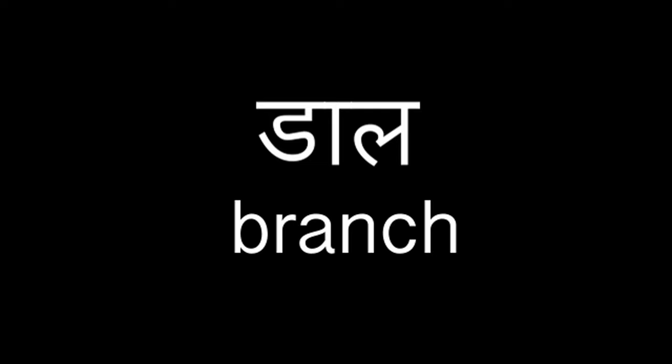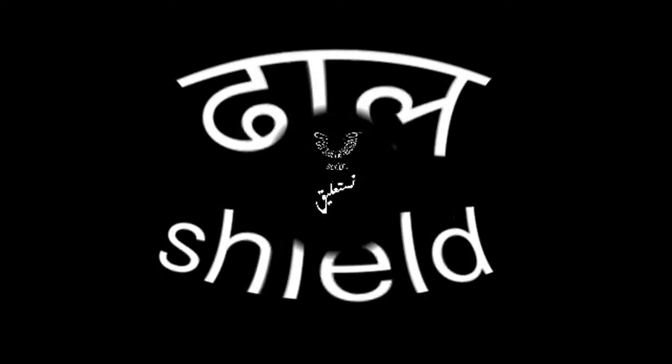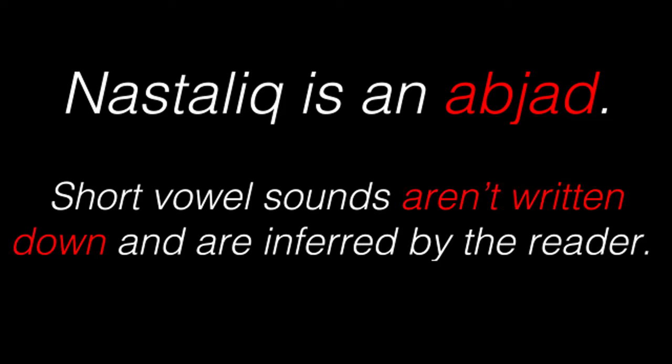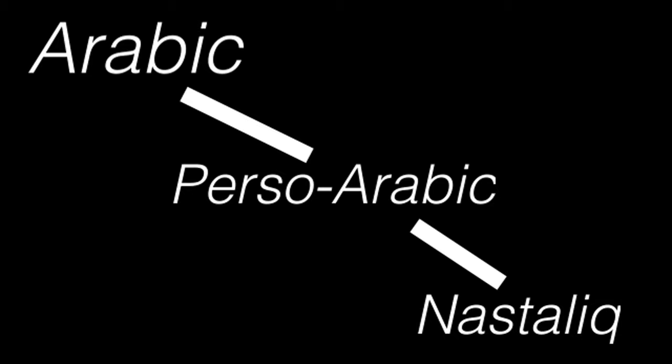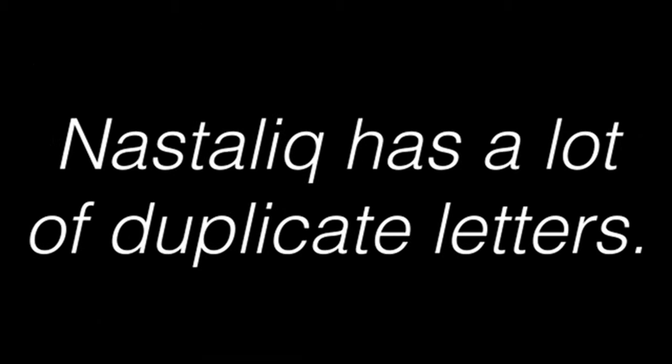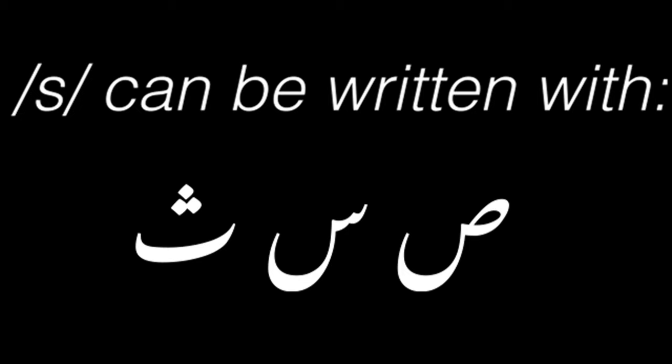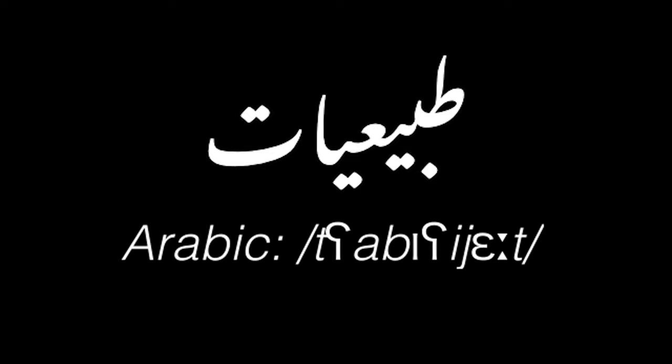Therefore, daal means lentils, but daal means a branch and daal means a shield. Urdu, on the other hand, uses the Nastaliq script, which is a calligraphic abjad, meaning that vowel sounds aren't written unless they're long vowels. Nastaliq is an extension of the Perso-Arabic script, which itself is an extension of the Arabic script. Nastaliq actually has a lot of duplicate letters, because the Arabic script has symbols for sounds that Urdu didn't have. Because of that, you can write the s sound with multiple characters, z with multiple characters, and h with multiple characters. While an Arabic speaker may read a word one way, an Urdu speaker would read it differently.